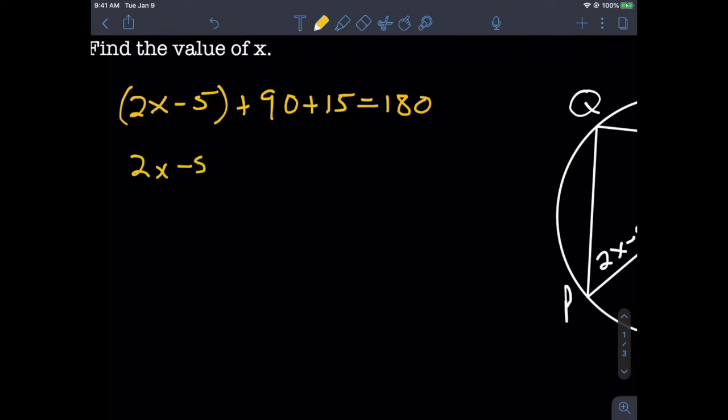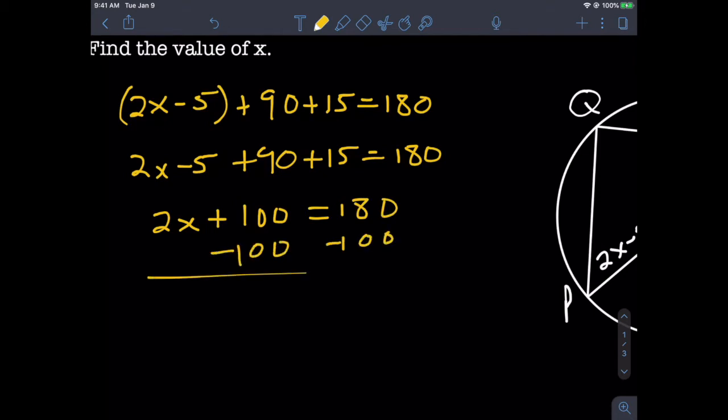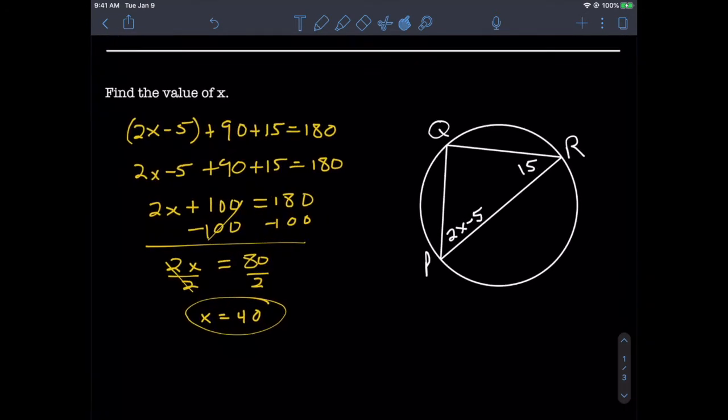We'll get rid of those parentheses and combine our like terms. 2x - 5 + 90 + 15 becomes 2x + 100 = 180. We're solving for x, so we subtract 100 from both sides, giving us 2x = 80. Then we divide both sides by 2, which gives us x = 40. All right, no fuss, no muss—that problem was for babies.